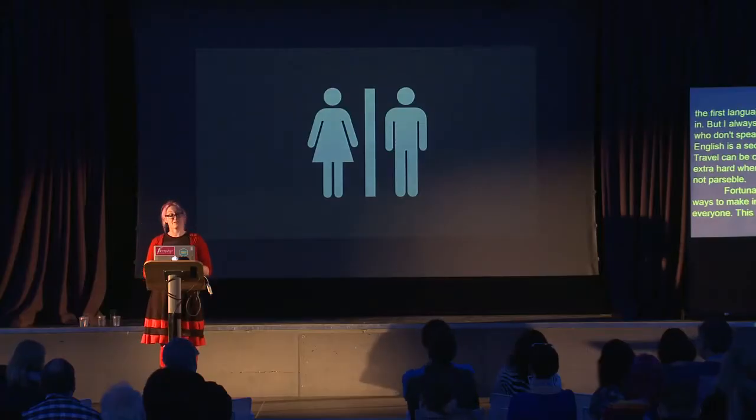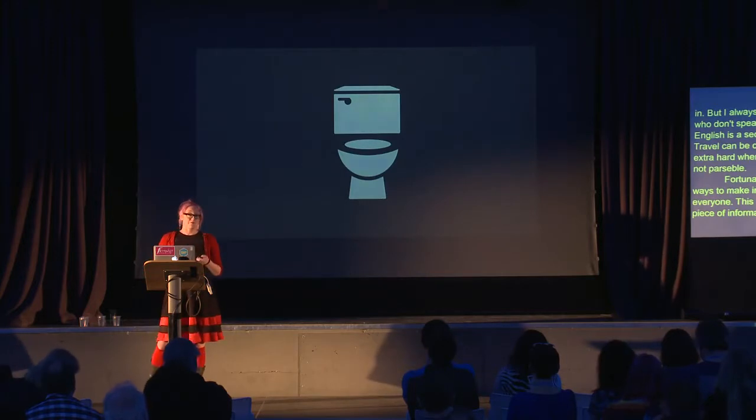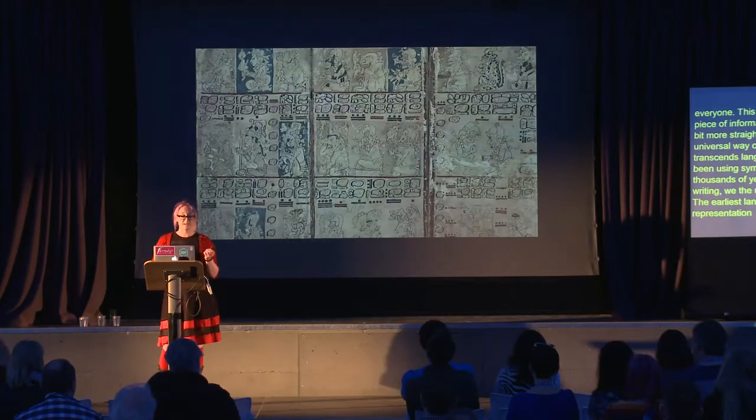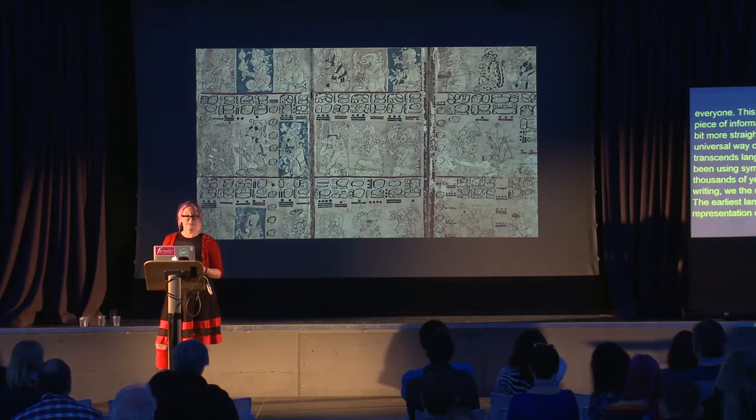Fortunately, places of transit have ways to make information more accessible to everyone. Symbols are a universal way of communicating that transcends language. Human beings have been using symbols to communicate for thousands of years. Before we had alphabetic writing systems, we used symbols. The earliest written languages comprise pictographic representations of physical objects — Egyptian hieroglyphs, Sumerian cuneiforms. The Mayans and the Olmecs both had pictographic writing systems.